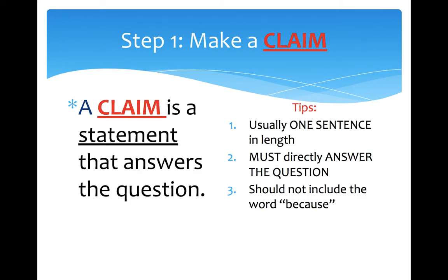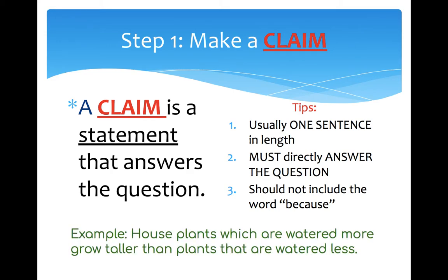The first thing you want to make sure you include in your scientific conclusion is a claim. A claim is just a fancier word for a statement — you are stating something to be true. In your scientific argument, your claim should be the answer to the question being asked. Some tips: it should be about one sentence in length and should directly answer your question. For our houseplant example, we could claim that house plants which are watered more grow taller than plants that are watered less. That's a simple, straightforward, to-the-point answer — a claim.